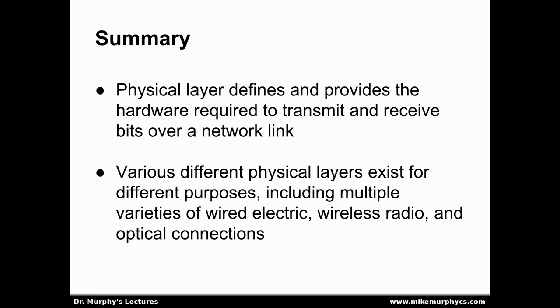All of these different types of physical layers share a common purpose: the physical layer, conceptually as part of the OSI model, defines and provides the hardware required to transmit and receive bits over a network link. We have many different choices of physical layer for different purposes, including multiple varieties of wired electric, wireless radio, and optical connections. But all of them serve the same purpose — to provide the hardware layer upon which the rest of the networking system will be built.